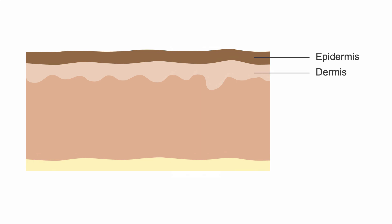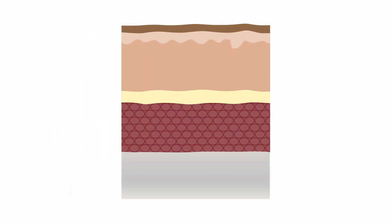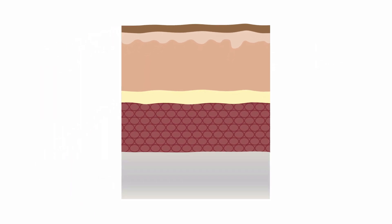Let's review the basic anatomy of skin and soft tissue. Skin can be thought of in three layers, which are the epidermis, dermis, and subcutaneous tissues or hypodermis. These all overlay soft tissue comprising of fascia and muscle, which cover bone.